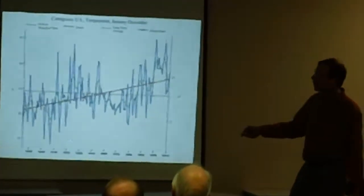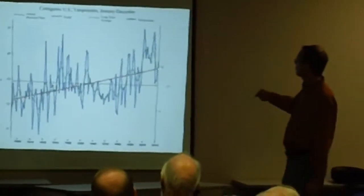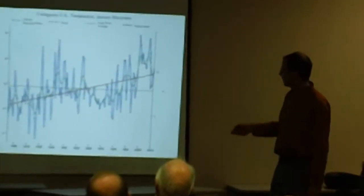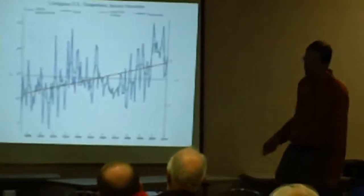Since 1895, when we started having good records, to 2010, this is the U.S. temperature. It has increased by about a degree and a half Fahrenheit, something like that. It's got some jiggles on it, but you can see the general kind of trend is upwards.